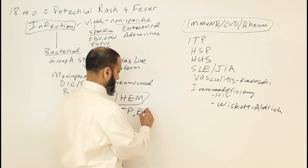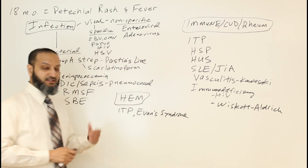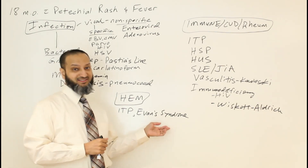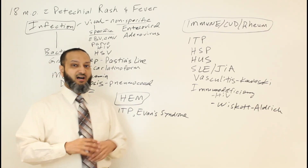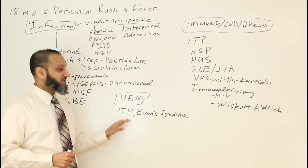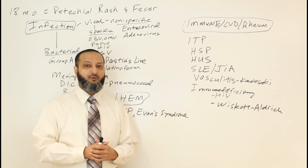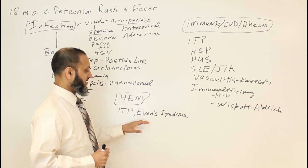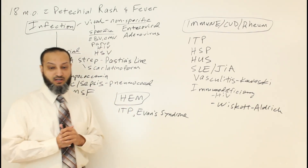Another entity is Evans syndrome — an immune-mediated process causing destruction not only of platelets (as in ITP) but also of red cells. Evans syndrome is a hemolytic process destroying red cells and platelets. Some believe Evans syndrome is on the spectrum of lupus because of the hemolytic anemia and thrombocytopenia.